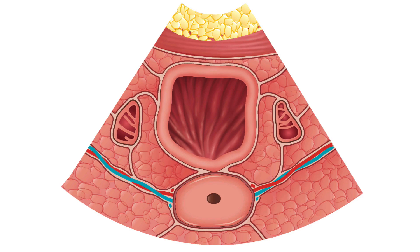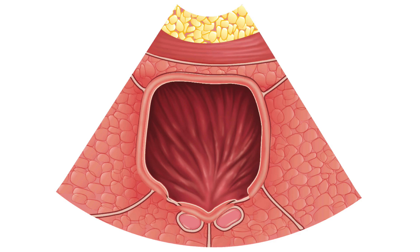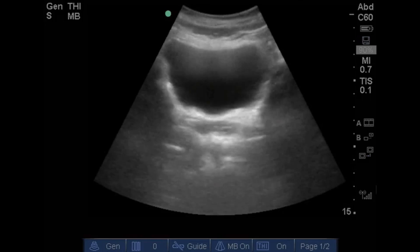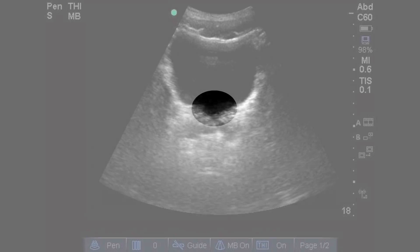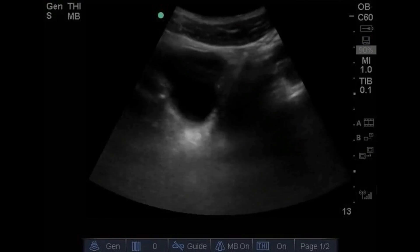Next we're going to image the bladder and evaluate for ureteral jets in the transverse view. View the bladder in sagittal first to confirm identification, then switch to transverse. The bladder will be somewhat square to rhomboid in shape. We're looking for the ureteral entry into the bladder for ureteral jets. Finding the ureteral implantation may be difficult, so instead look for the trigone — the small dip or depression in the posterior wall of the bladder. Here in the transverse plane you can see the trigone and the ureteral entry, which is visible but not always apparent.